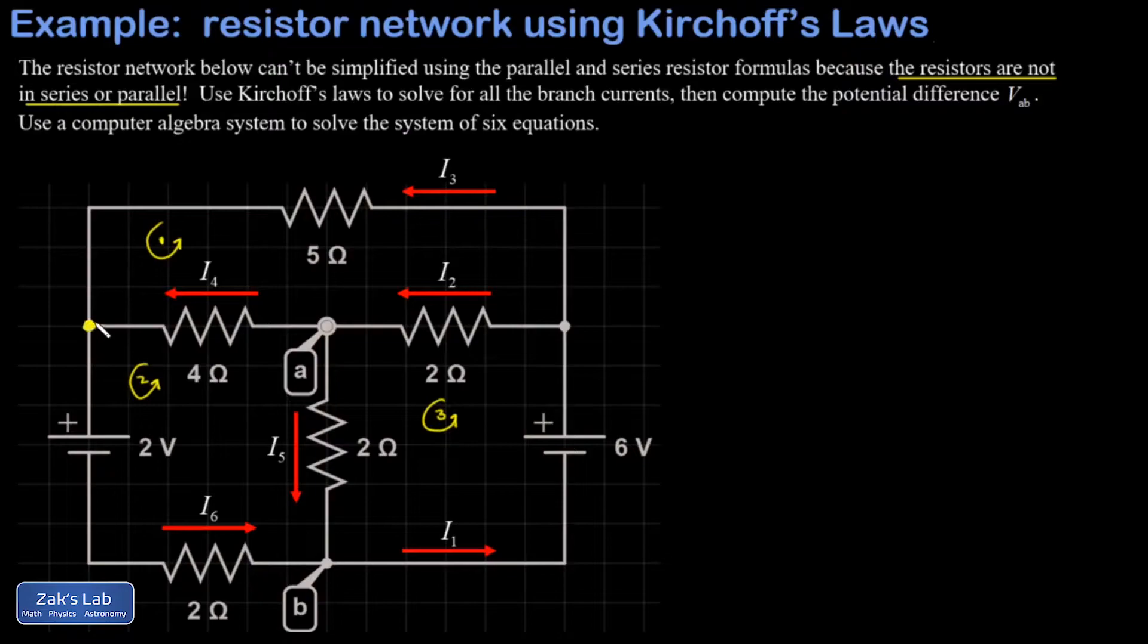In each of these loops, I'm going to start at the lower left-hand corner to keep myself organized. And then I have to remember the rules for voltage increases and decreases. If I'm going the same direction as the current across a resistor, that must be a voltage drop. If I'm going the opposite direction, it would be a voltage increase. If I go from the negative to positive terminal of the battery, that's a voltage increase, and vice versa.